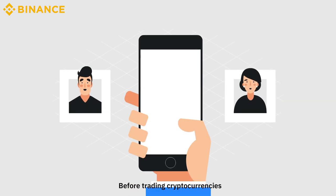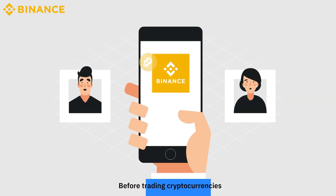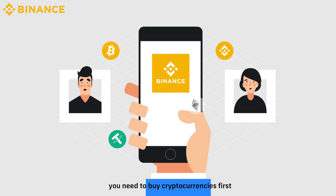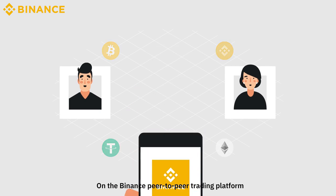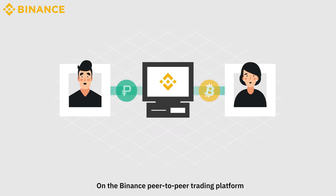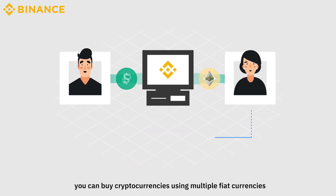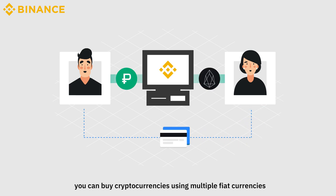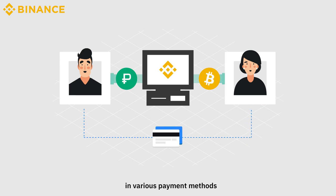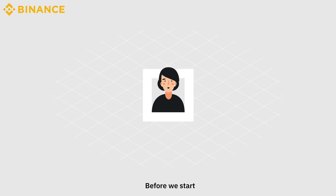Before trading cryptocurrencies, you need to buy cryptocurrencies first. On the Binance peer-to-peer trading platform, you can buy cryptocurrencies using multiple fiat currencies in various payment methods. It's super simple.